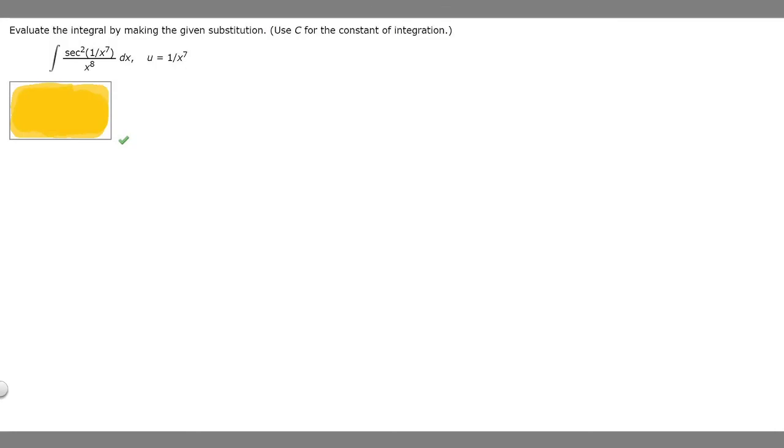In this problem we're told to evaluate the integral by making the given substitution. Use C for the constant of integration. We're given the integral of secant squared of 1 over x to the 7, over x to the 8, times dx, and u is going to equal 1 over x to the 7.